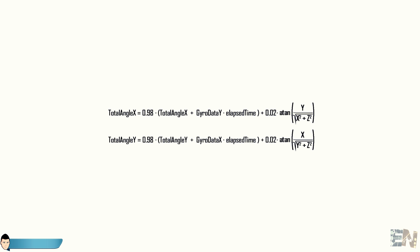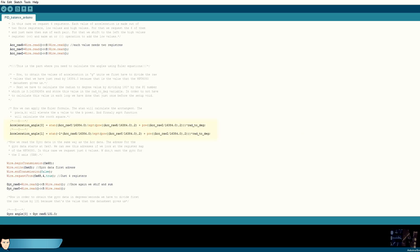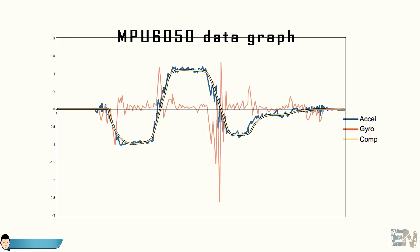We can get the total angle using this formula where we can obtain the gyro angle directly with the IMU values and the acceleration angle using the Euler formula and finally applying the complementary filter.